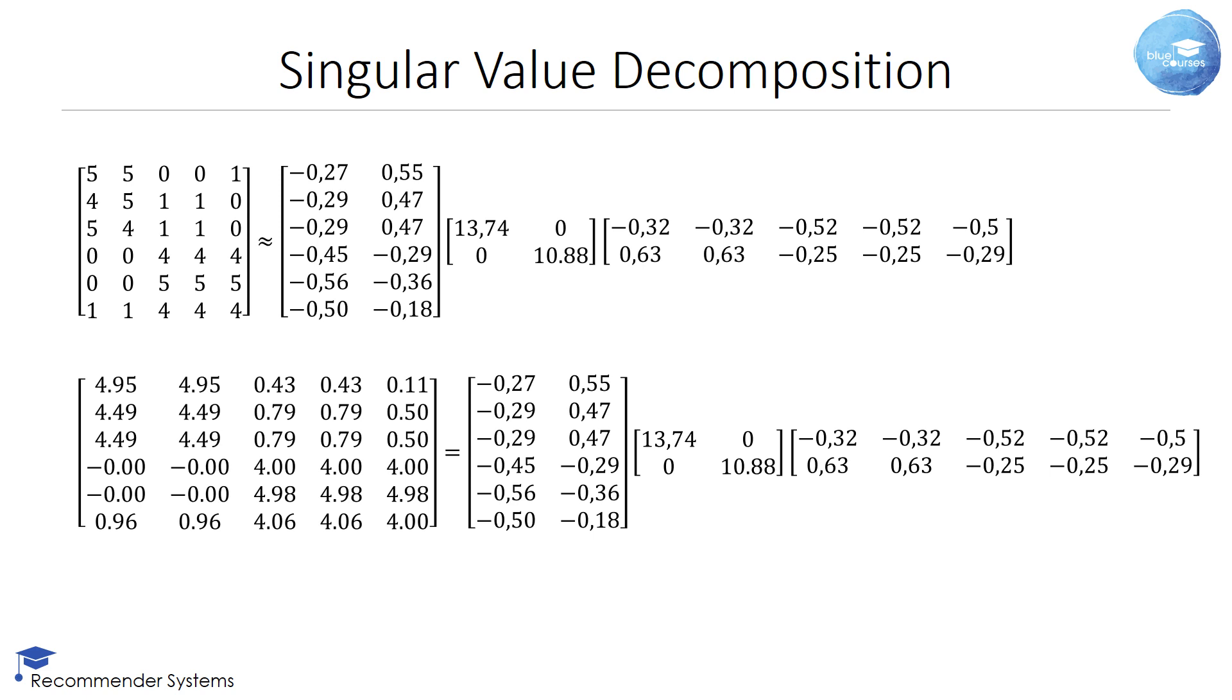Let's now also figure out how good this approximation is. At the bottom, we calculated the exact dot product of the U, sigma and V transpose matrices. You can see that the result approximates our original rating matrix pretty good. The difference between both the original matrix and the approximation can be quantified using the root mean squared error, RMSE, or Frobenius norm of the differences.